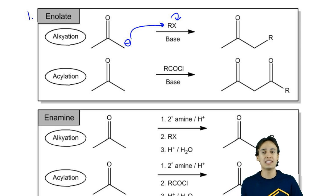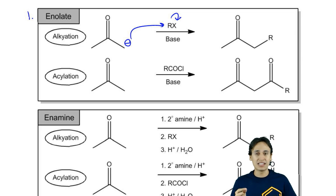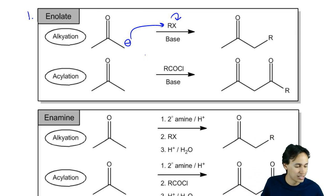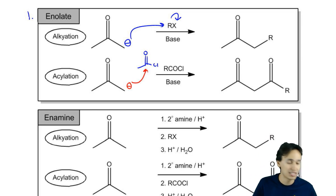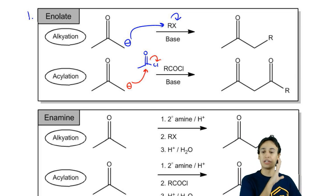One thing to keep in mind is that pretty much any time that I tell you that you can alkylate something, it means that you can also acylate something. To acylate something, that means that you'd be using an acid chloride. The mechanism would be extremely similar. It would just be that your negative attacks the carbon and eventually you kick out the Cl. It means that you'd get a carbonyl there instead of just an R group. This is the first reaction that does alpha carbon alkylation and it's called enolate alkylation. It's definitely the most straightforward of the three.